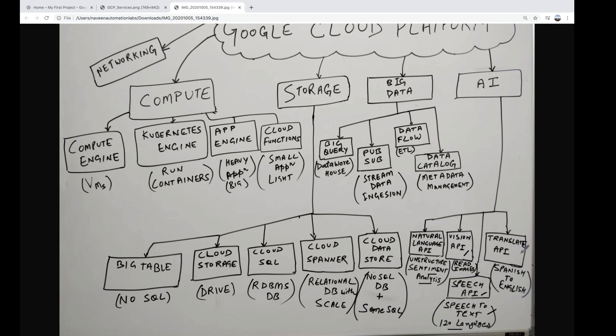The Translate API works just like Google Translator, converting text from one language to another — for example, Spanish to English, Chinese to English, or English to Chinese. This is again provided by GCP's AI services.